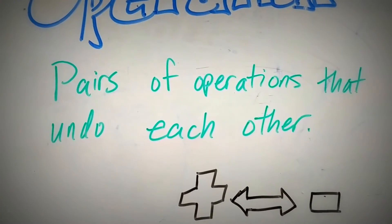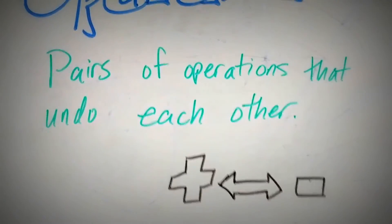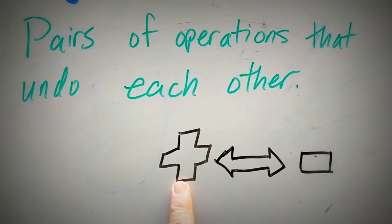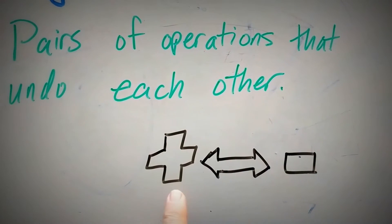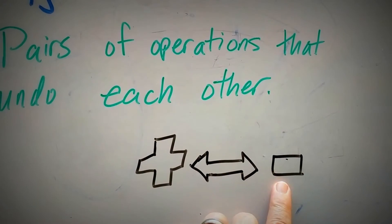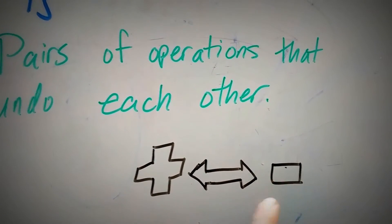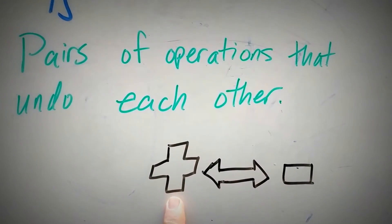Those are pairs of operations that undo each other. Specifically for this video, we're talking about addition and subtraction. Addition undoes subtraction, or negative. And subtraction undoes an addition, or positive.